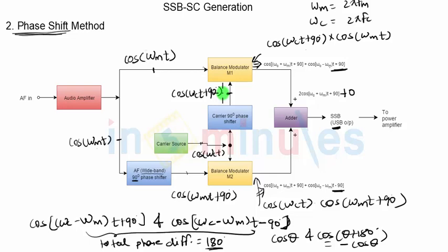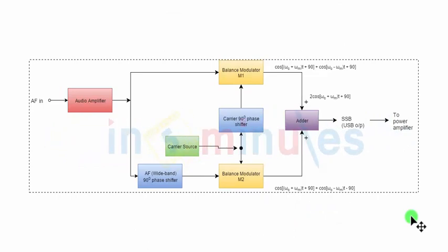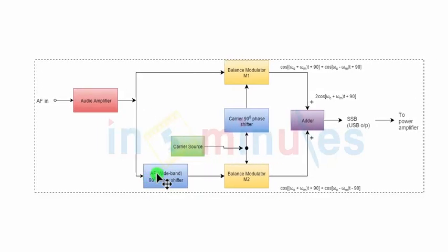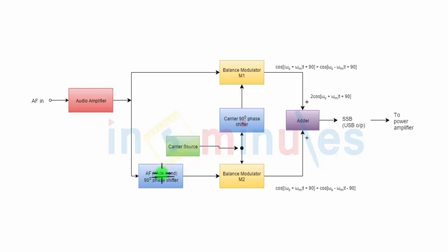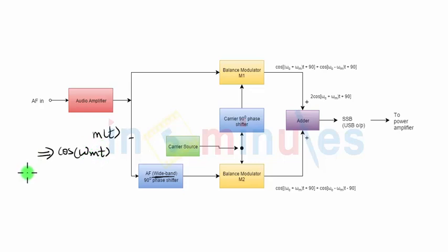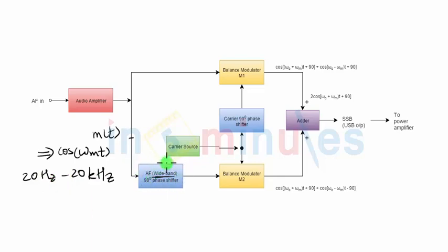However, this doesn't come free of cost — there is a new drawback in the phase shift method. In the phase shift method we have to use a block called the AF wideband 90-degree phase shifter. It is called 'wideband' because the input to this block is the modulating signal m(t), which in practice contains all frequencies from 20 Hz to 20 kHz. Hence you need to provide a phase shift not just to a single frequency but to a range of frequencies.